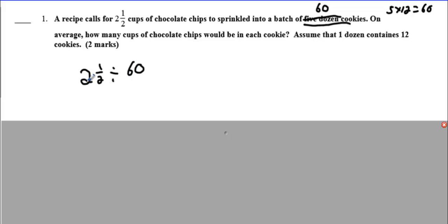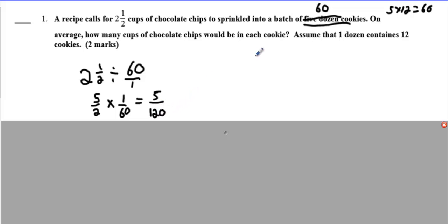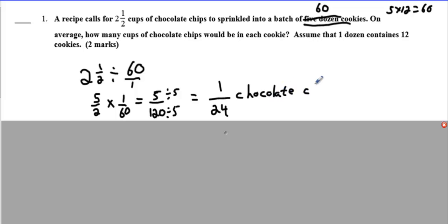If you divide chocolate chips up, your answer is going to be in chocolate chips. Now how do we do this? We're going to convert 2 and a half to an improper fraction, then flip the sign — so 60 over 1 becomes 1 over 60. That's going to make 5 over 120. Let's reduce this: 5 goes into both, giving us 1 over 24. Chocolate chips.